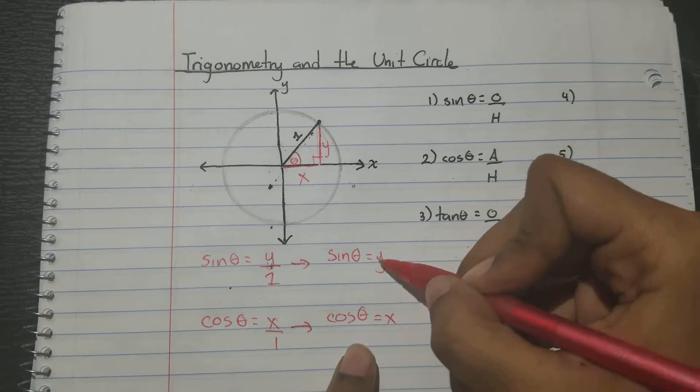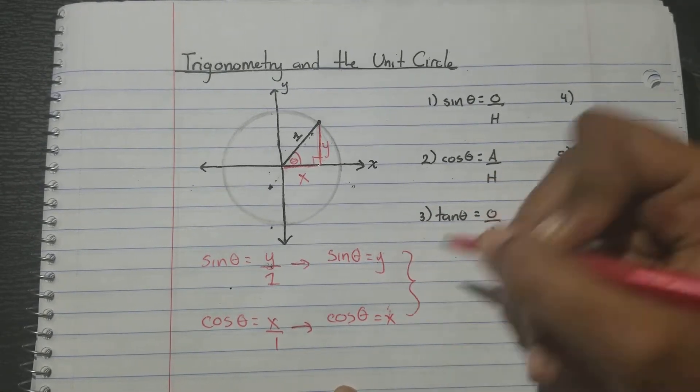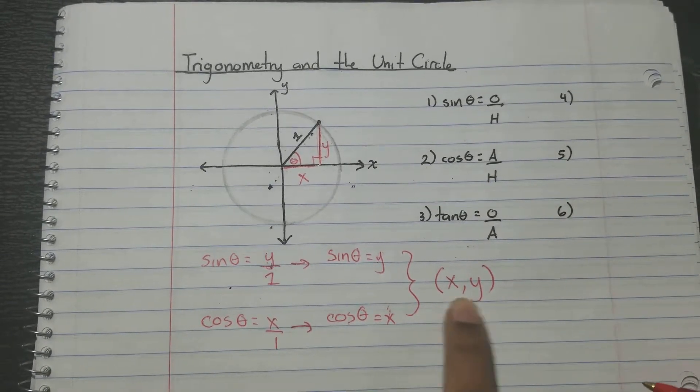So we have our normal variables, x and y. Then we have our trig variables. What we can do is say, well, in the regular coordinate plane, my coordinates are written as x, y.